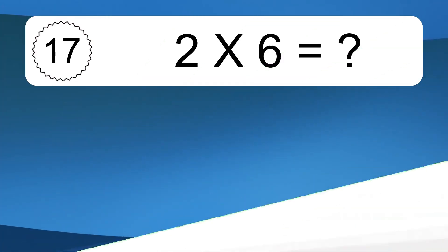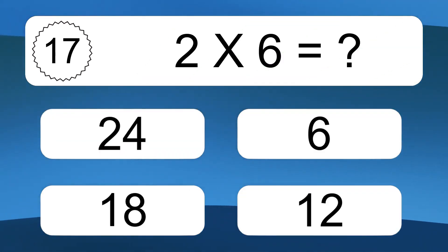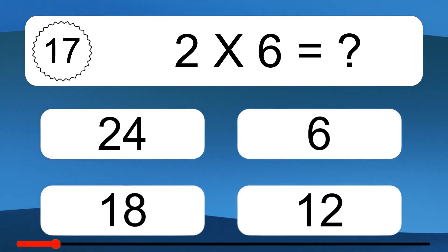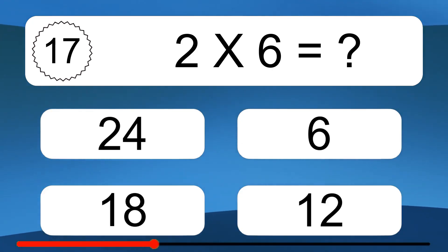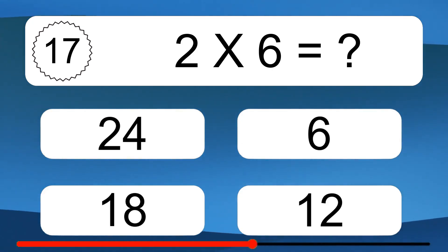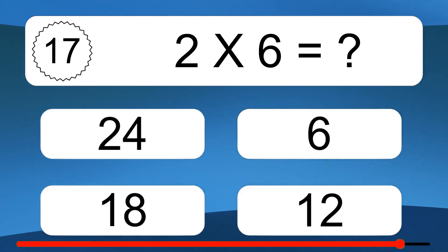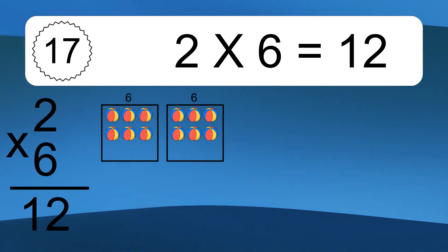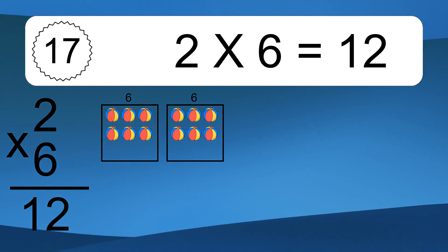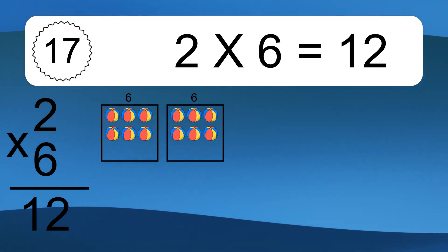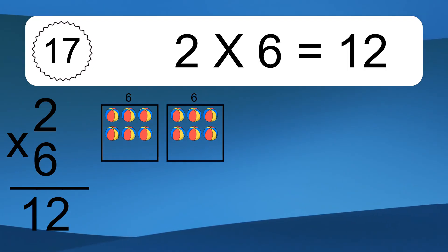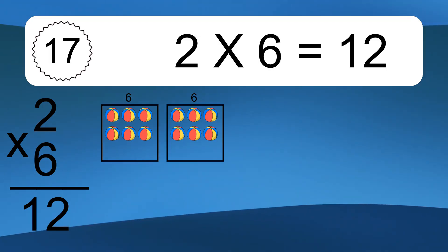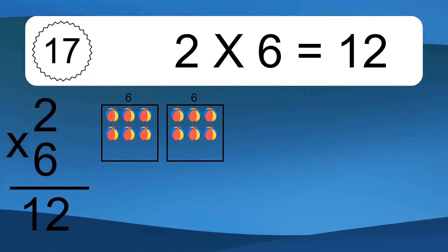6 times 6 equals what? 6 times 6 equals 12. We have 2 boxes, and each box has 6 colorful balls inside. If you count all the balls in all the boxes together, you will have 2 times 6 balls. This equals 12 balls.